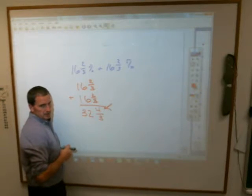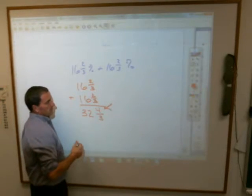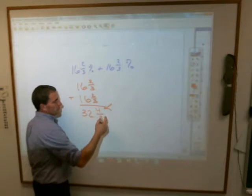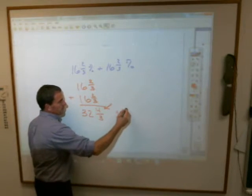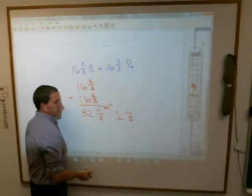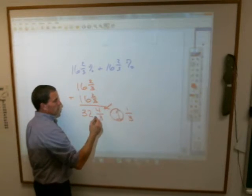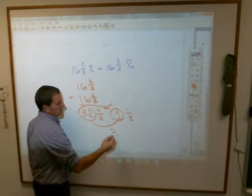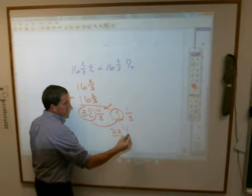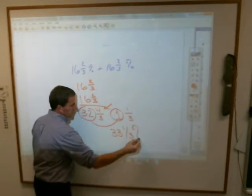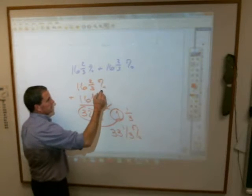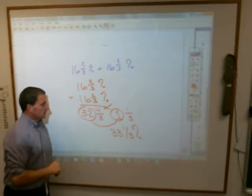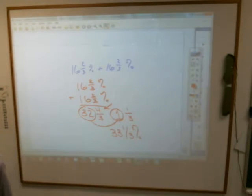You have to make that a mixed number. What is four-thirds as a mixed number, Amelia? One and one-third. Right. Three goes into four one whole time with one left over. And then you have to take and combine your whole numbers. Thirty-two plus one is thirty-three and one-third. And they were asking us to add two percentages together. So that would be the whole combination of all of that.